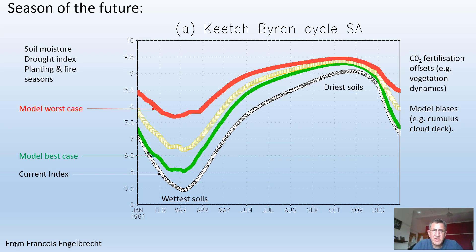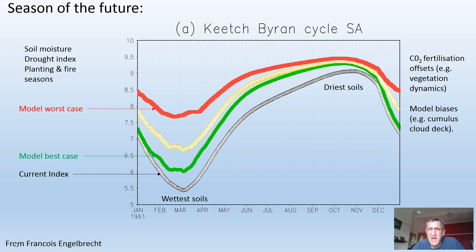This graph shows soil moisture. The bottom gray graph shows the current long-term average of soil moisture, especially in the summer rainfall areas. Our soils are wet just after March at the end of the rainy season, and then driest again towards the end of winter — our driest soils are in November. The color graphs show climate model predictions: the top is the worst-case scenario and the green is the best-case scenario. Even in the best case, our soils never get as moist as they are now.